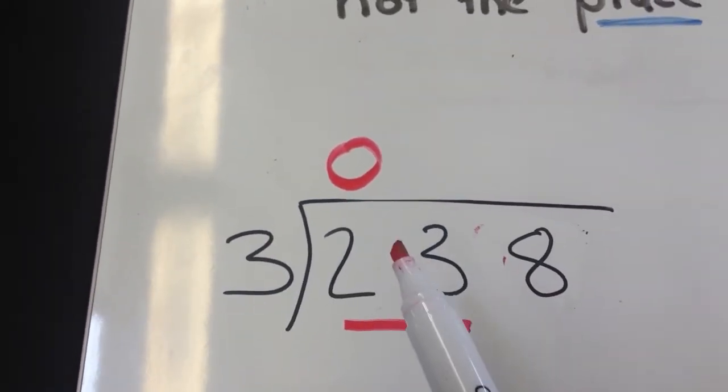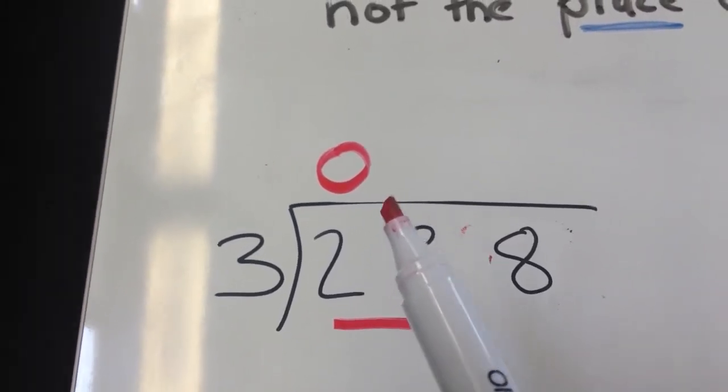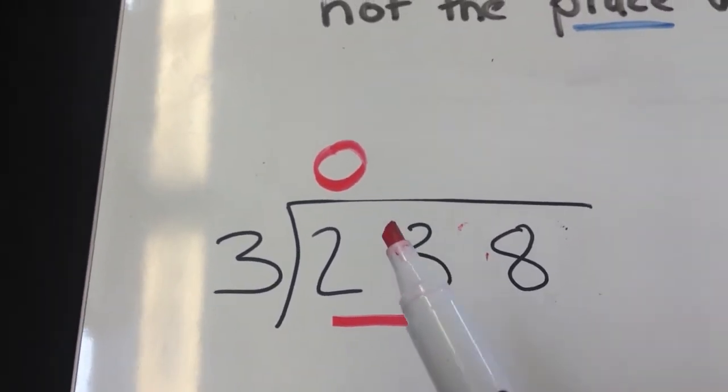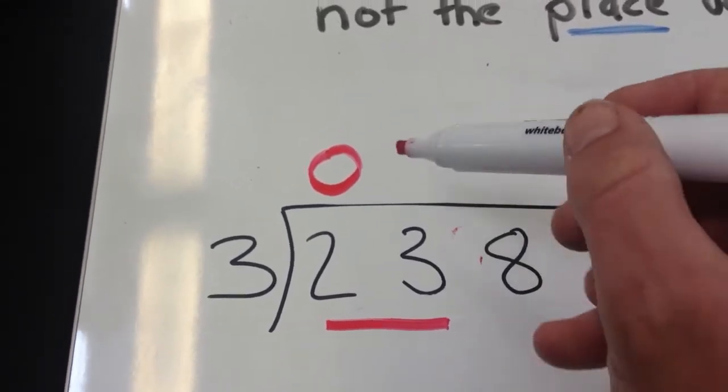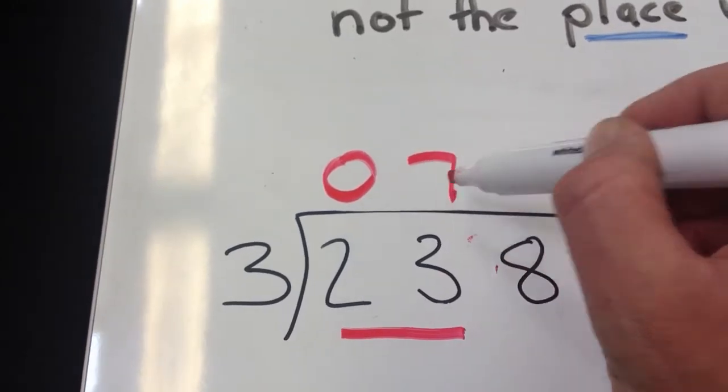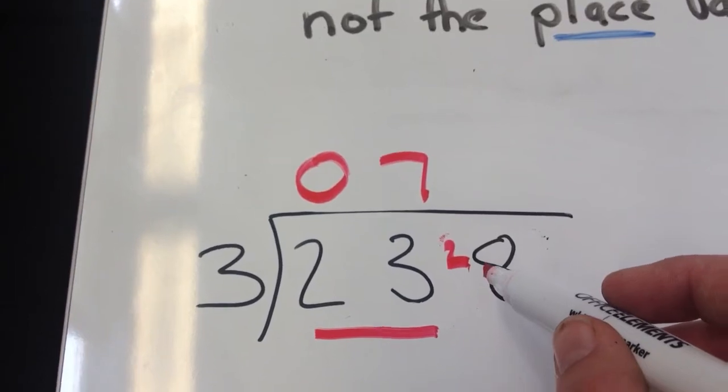So we say, 3 goes into 23. Knowing my basic facts, I know that 6 threes are 18, 7 threes are 21, 8 threes are 24. So 8 threes is too much, 7 threes is 21. Therefore, we've got 2 left over, so I put the 2 here.